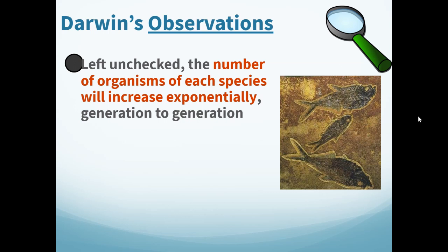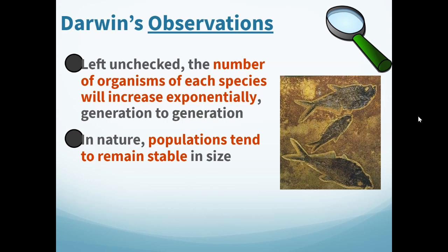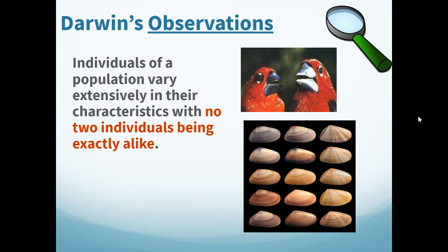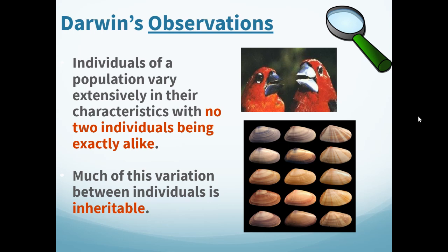Darwin also discovered that, left unchecked, the number of organisms of each species will always increase exponentially generation to generation, while in nature populations tend to remain stable in size. This was influenced by Thomas Malthus' theory about human populations, which also applies to animals and plants. More offspring must be born than will survive, and the environment plays a role in stabilizing populations by serving as a limiting factor. Individuals of a population vary extensively in their characteristics, showing lots of genetic diversity, and much of that variation is inherited.